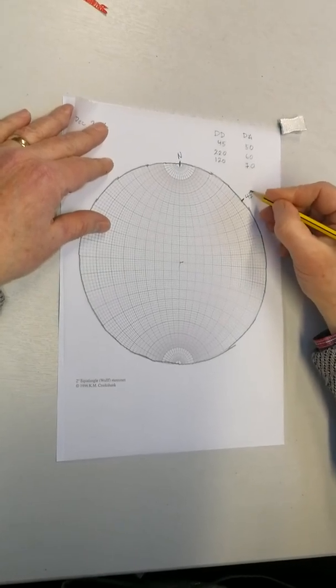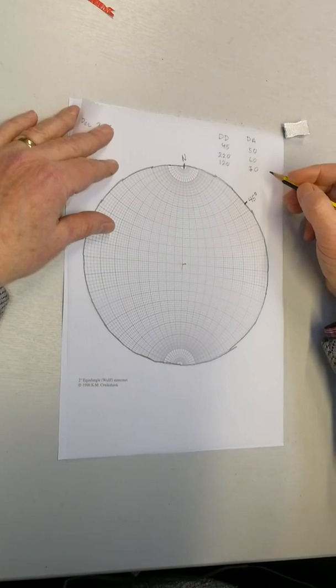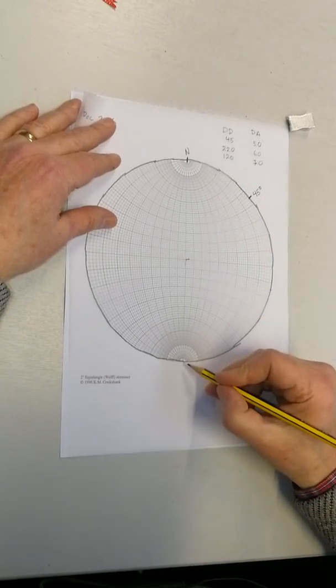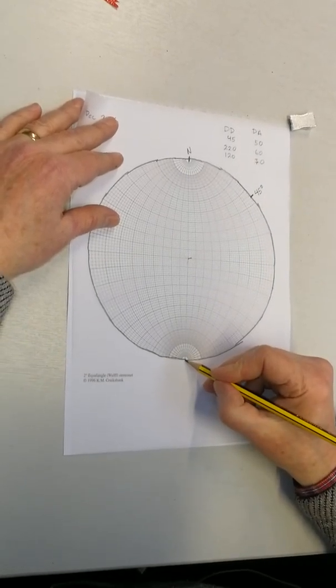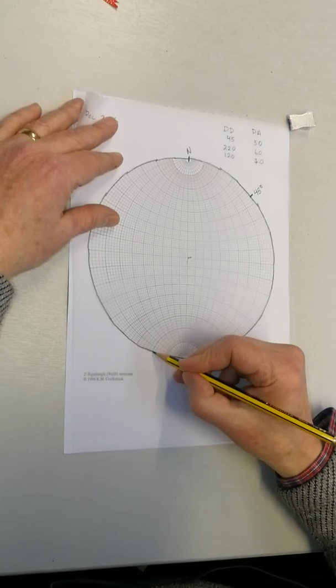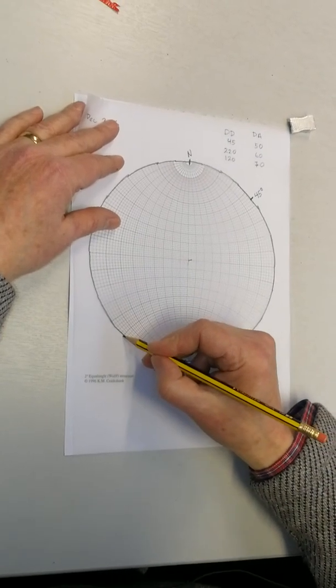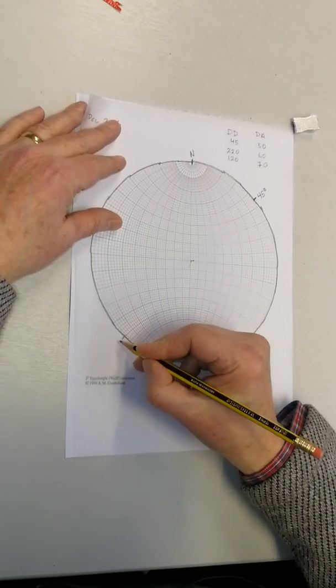I'm looking for 220. South is 180, 190, 200, 210, 220. So I'm going to mark 220 there.